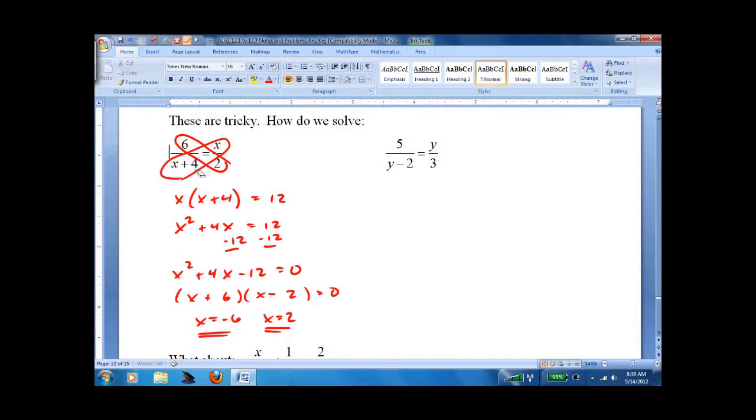Now the only problem with these is that sometimes you introduce an answer that won't work. So you have to go back and check. And I just look at this, negative 6 plus 4 is negative 2, 6 over negative 2 is negative 3, negative 6 over 2 is negative 3. So this one works.